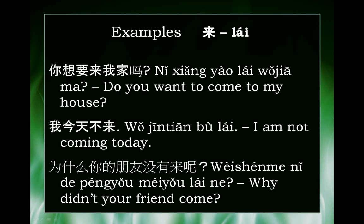And finally, 为什么你的朋友没有来呢? — 'Why didn't your friends come?' Breaking it down: 为什么 means 'why,' 你的朋友 means 'your friends,' 没有 means 'didn't' or 'haven't,' and 来 is 'to come.' The 呢 at the end of the sentence adds an inflection that indicates it's a question.